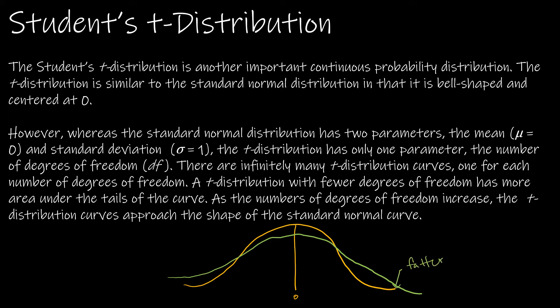Essentially, the probabilities are a little bit different because there's more matter in the tail, and the only thing you need to know to know what the t-distribution will look like is the degrees of freedom.